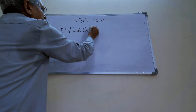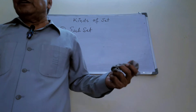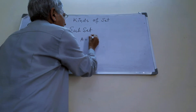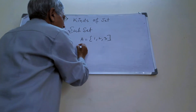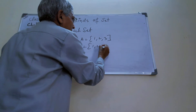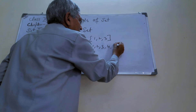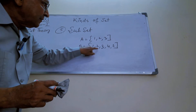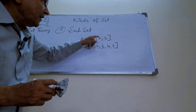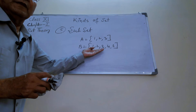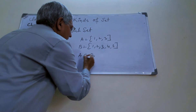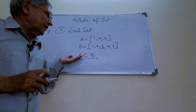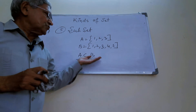Fifth kind: subset. I want to make it clear with the help of an example. Now, A is a set which contains three elements: 1, 2, 3. And B is another set which contains more elements. But here you see, all the elements of A are in B — all the elements of A are elements of B also. Then A is a subset of B. If every element of A is an element of B, then it is called A is a subset of B.